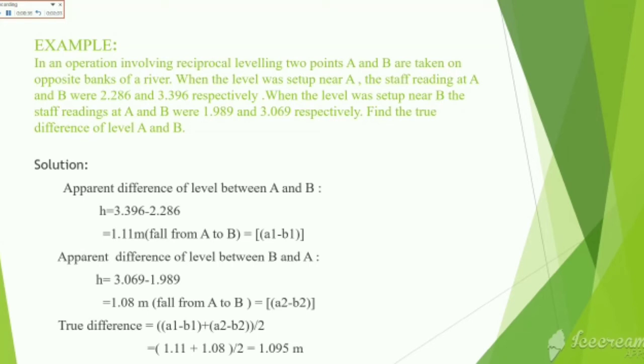The apparent difference of level between B and A, that is h, is equal to 3.069 - 1.989, that is equal to 1.08 meters rise from A to B, that is equal to a2-b2. Now, the true difference, that is equal to (a1-b1 + a2-b2) / 2, is equal to 1.095 meters. Thank you.